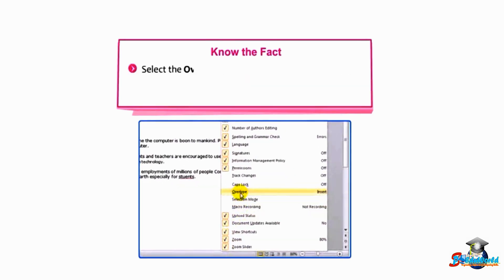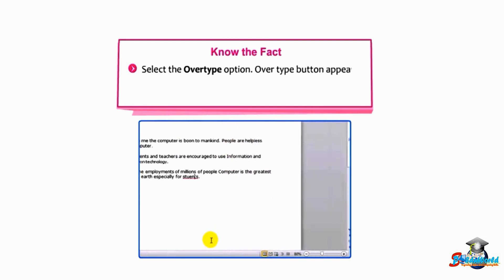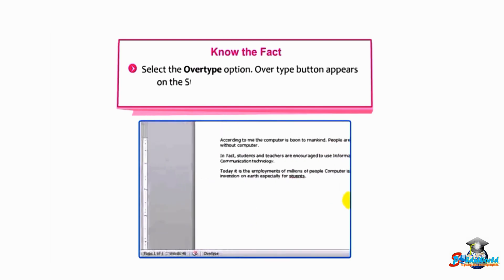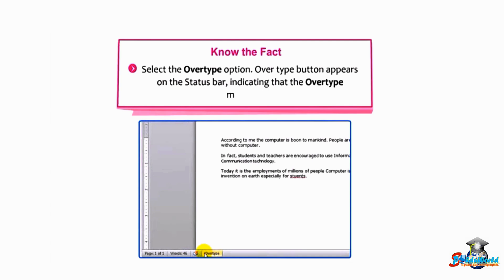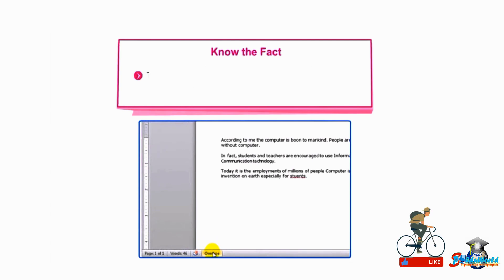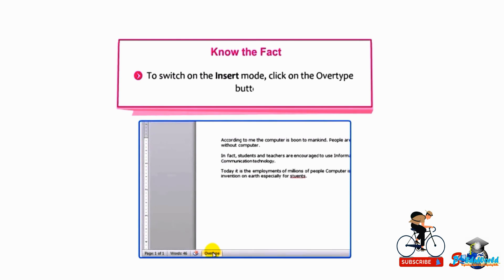Select the Overtype option — the Overtype button appears on the status bar, indicating that Overtype mode is on. To switch back to Insert mode, click on the Overtype button.